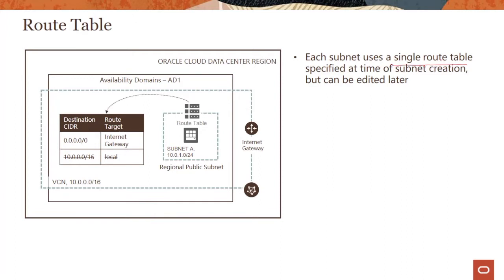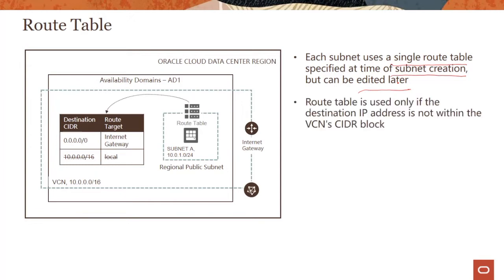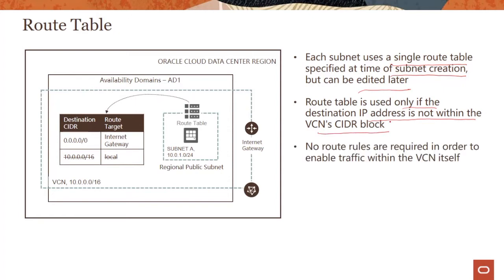Important considerations: each subnet uses a single route table — each subnet can only have one route table. You can specify that when creating the subnet or edit it later. The route table is used only if the destination IP address is not within the VCN's CIDR block. You don't require any route rules to enable traffic within the VCN itself, as you can see in this graphic.